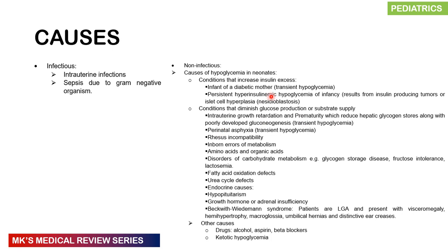Other causes include perinatal asphyxia, rhesus incompatibility, inborn errors of metabolism such as amino acid or organic acid disorders, carbohydrate metabolism disorders like glycogen storage diseases, fructose intolerance, and galactosemia, free fatty acid oxidation defects, urea cycle defects, endocrine disorders like hypopituitarism, growth hormone or adrenal insufficiency, Beckwith-Wiedemann syndrome — where patients are large for gestational age with visceromegaly, hemihypertrophy, macroglossia, and distinctive ear creases — as well as drugs, alcohol, aspirin, beta blockers, or ketotic hypoglycemia.